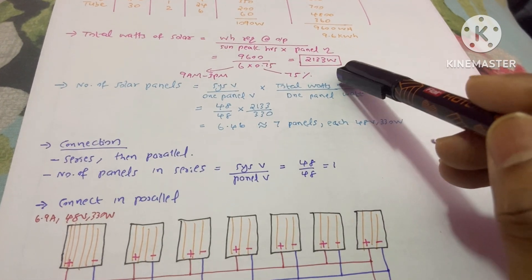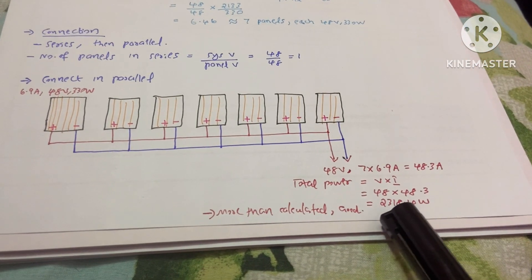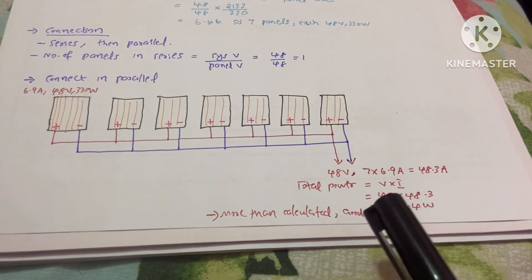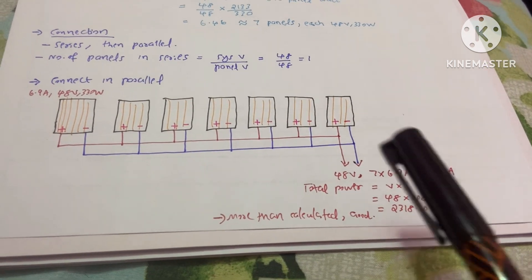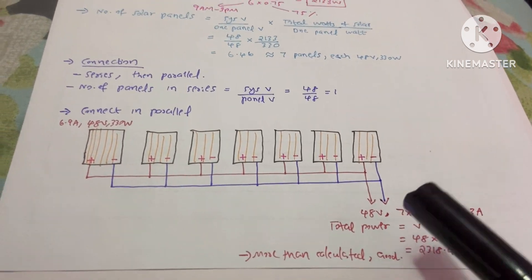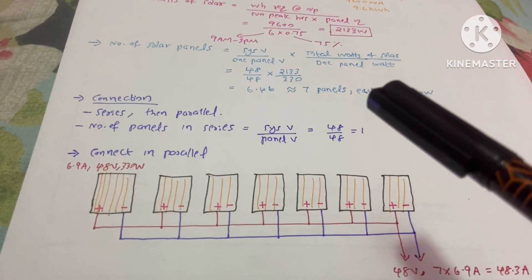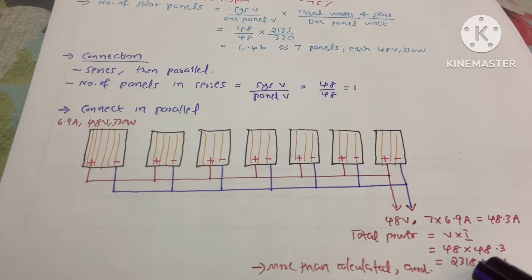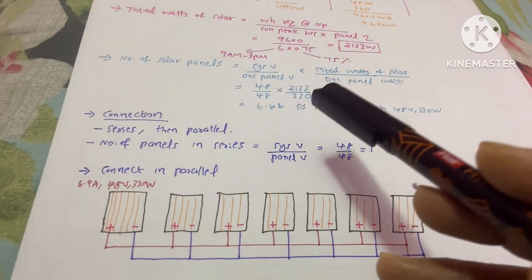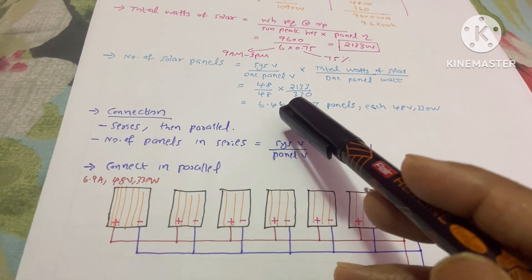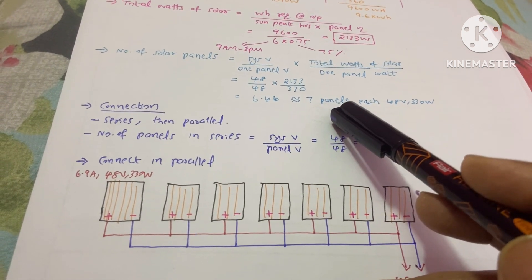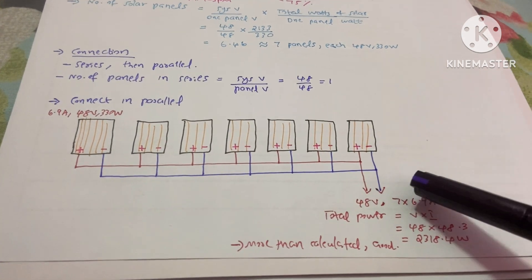Our calculated requirement was 2133W and we're getting 2318.4W, which is a little more — that's not a problem. The panels have enough power to supply all equipment. It is slightly higher because our calculation gave 6.46 panels but we rounded up to seven panels.